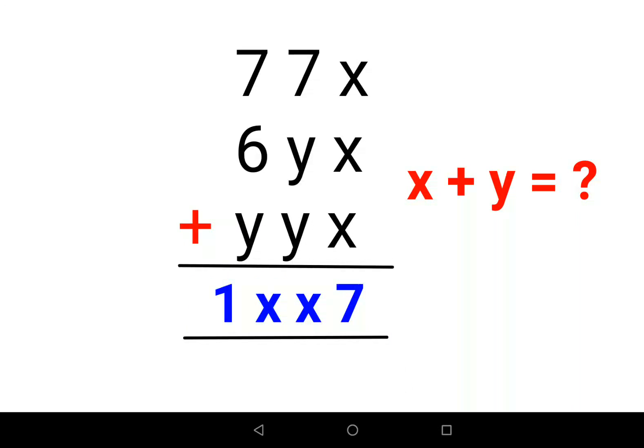Welcome everyone. Today we are going to understand how to solve this kind of math puzzle where we are supposed to find the value of x and y. The details given are three numbers: the first number is 77x, the next number is 6yx, and the third number is yyx. When all three are added you get the answer as 1xx7. Out of all these details, how are we supposed to find the value of x and y in order to find the total sum?